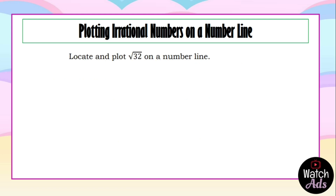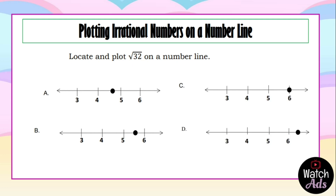Now let's try multiple choice. Locate and plot the square root of 32 on a number line. The first thing to consider is finding two perfect squares where 32 lies between them. 4 is the square root of 16, 5 is the square root of 25, and 6 is the square root of 36. The square root of 32 lies between 25 and 36, so it falls between 5 and 6. We find the dot between 5 and 6, and that is letter B.